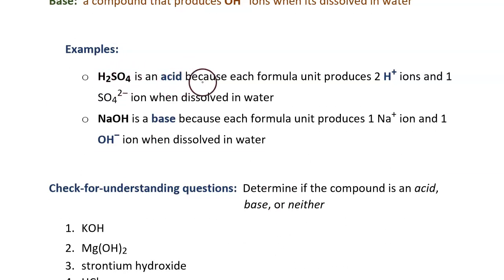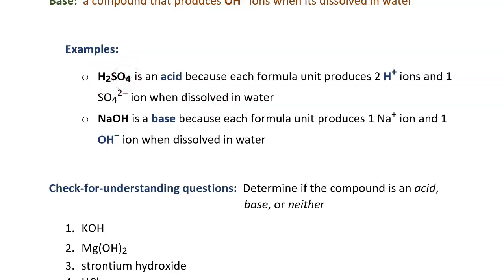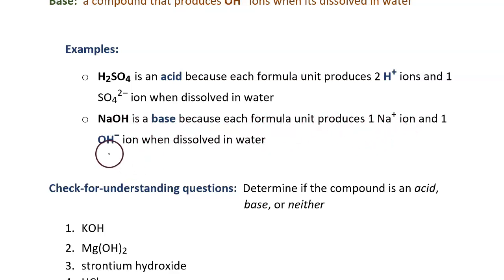H2SO4 is an acid because each formula unit produces two hydrogen ions and one sulfate ion when dissolved in water. If you take this substance and dissolve it in water, it's going to dissociate into free ions. Every formula unit of this will create two hydrogen ions — therefore, it's an acid. NaOH is a base because each formula unit will produce one sodium ion and one hydroxide ion when dissolved in water. If you dissolve NaOH in water, it will dissociate into sodium ions and hydroxide ions. Because it makes the hydroxide ions, it's called a base.